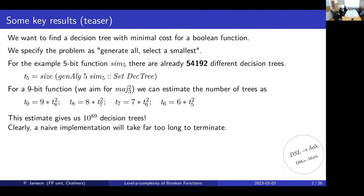If we want to aim for our running example — two-level iterated majority, written as majority of three squared — it's modeling a voting system where you vote first in groups, and then the winner of each group votes for the winner of the whole thing. If we do this naively, we can estimate we would need to compute 10 to the power of 89 decision trees. And clearly that will not be feasible.